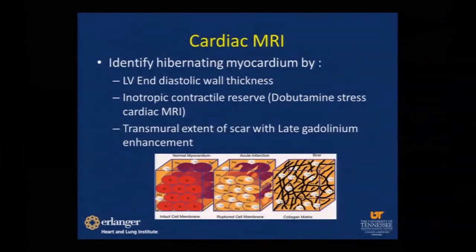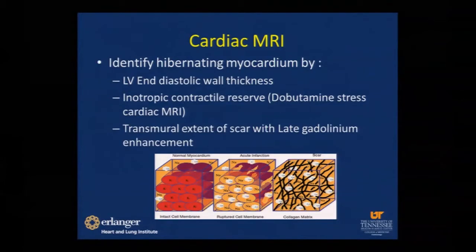Now let's talk about cardiac MRI. There are a variety of criteria that can be used to identify hibernating myocardium: LV end-diastolic wall thickness, inotropic contractile reserve using dobutamine stress cardiac MRI, and most commonly the transmural extent of scar with late gadolinium enhancement.